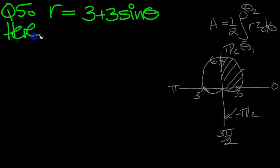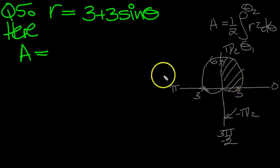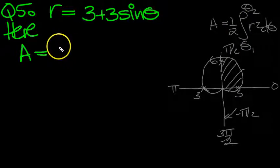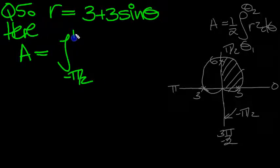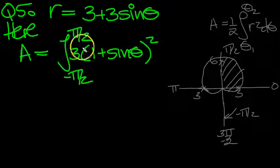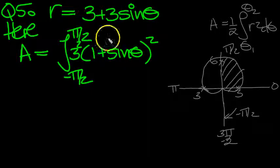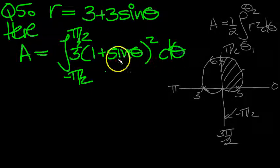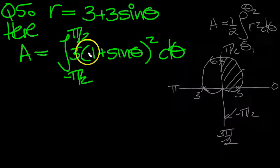So let's do that then. Here, the area enclosed by this curve is going to be 2 of these, so the half will cancel with the 2. The integral between minus pi over 2 and pi over 2 of r squared. So it's 3, I'll put that outside the bracket because it's common, and 1 plus sine theta squared. And this is squared because the 3 came out. d theta, that's r squared.